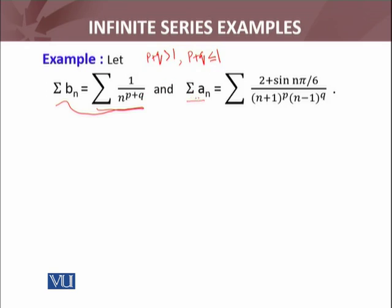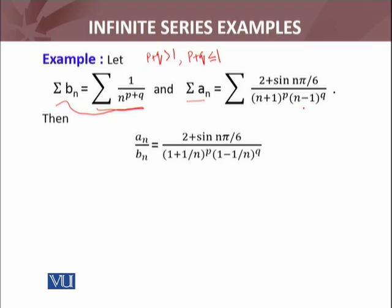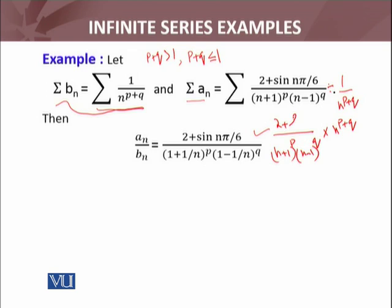We have another series summation aₙ, which is the more complicated series consisting of (2 + sin(nπ/x)) divided by (n+1)ᵖ · (n−1)ᵍ. According to the result we proved, we have to find the fraction aₙ/bₙ. Here aₙ is this term divided by bₙ, and bₙ = 1/nᵖ⁺ᵍ. When division converts to multiplication, we get nᵖ⁺ᵍ in the numerator. I will now take n as a common factor from both terms in the denominator.